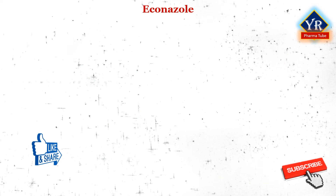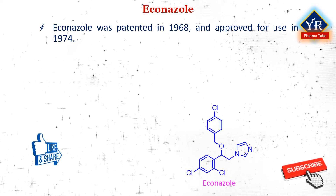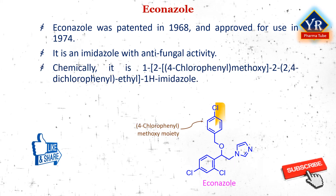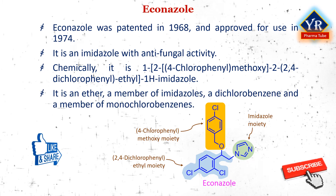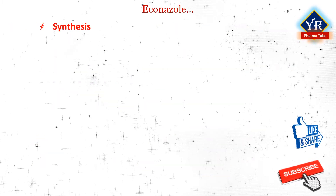The next drug is econazole. Econazole was patented in 1968 and approved for medical use in 1974. It is an imidazole with antifungal activity. Chemically, it is 1-[2-(4-chlorophenyl)methoxy]-2-(2,4-dichlorophenyl)ethyl-1H-imidazole. It is a member of the class of imidazoles — specifically 1-(2,4-dichlorophenyl)-2-imidazol-1-yl ethanol — in which the hydroxyl hydrogen is replaced by a 4-chlorobenzyl group. It is an ether, a member of imidazoles, a dichlorobenzene, and a member of monochlorobenzenes. Imidazoles lacking the nitro group no longer have any antiprotozoal activity; however, such drugs are effective antifungal agents.